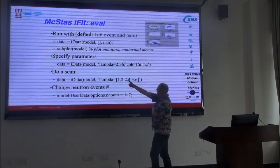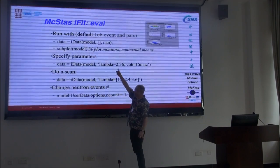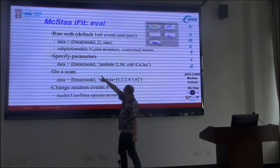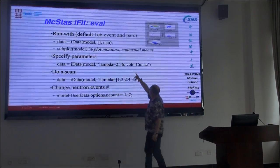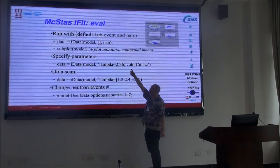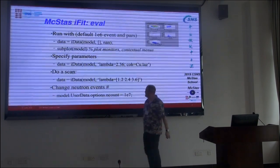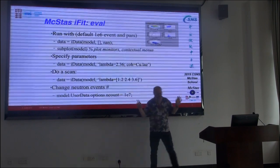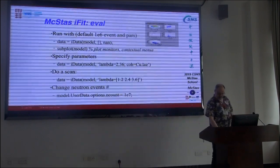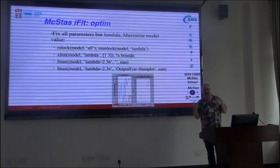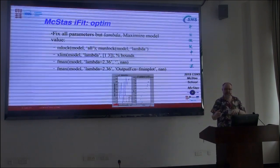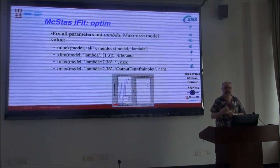You can specify parameters just like in the normal McStas interface. In this model we run with a lambda of a given value and set the coherent scattering to come from copper. You can then do things like a scan, which moves in the direction of evaluating McStas as an object function — essentially a cost function.